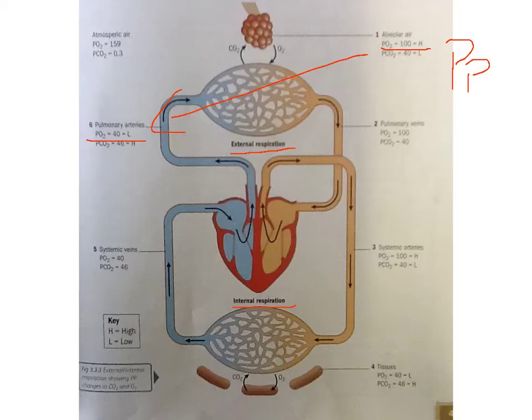So the pressure of oxygen in the capillaries is now 100. As it travels through the body to where we have internal respiration, you can see here in the arteries coming down to the blood, you've got a partial pressure of oxygen of 100.